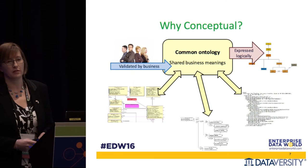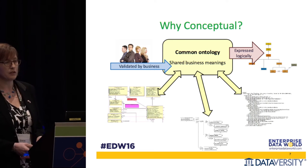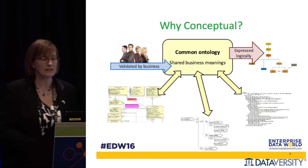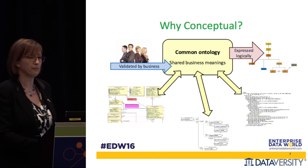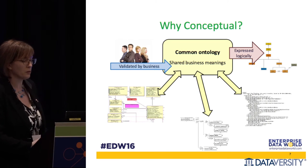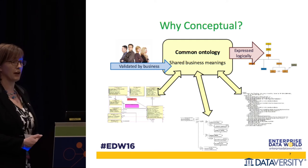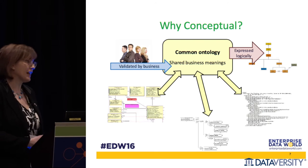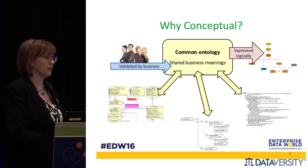That's where a conceptual model comes in. There are all sorts of models — entity relationship models, UML models, XML — all sorts of different ways of doing it. But what we really need is to start at the business: we need a common ontology. The business are the key drivers here. Business gets to say what they want you to build, and unless they can understand what it is they're going to build, then you're going to build the wrong thing.